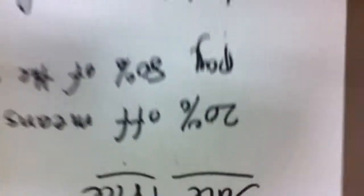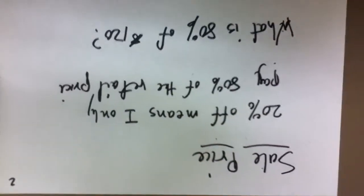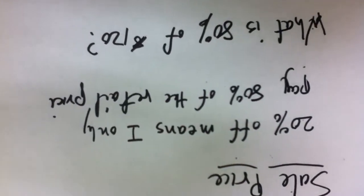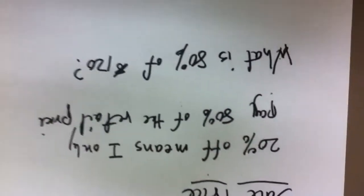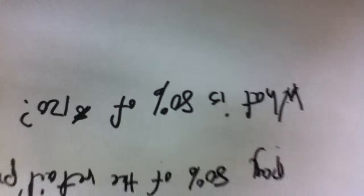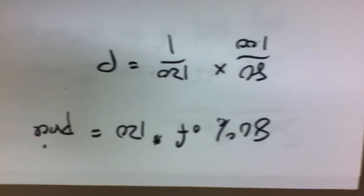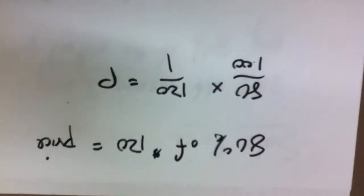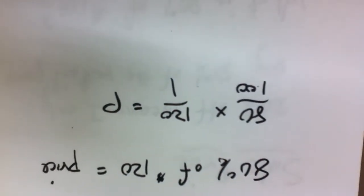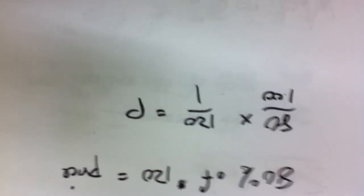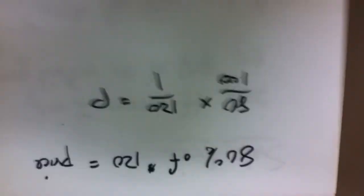Let's find out the sale price. 20% off means I only pay 80% of the retail price. What is 80% of $120? That's the question. Set it up. 80% of $120 equals the price. 80 over $100 times $120 over $1 is the price. We're setting it up.